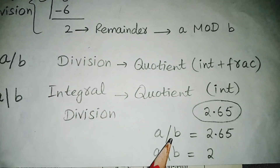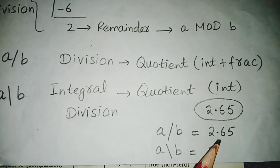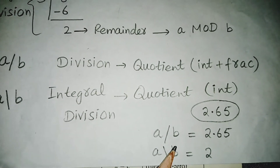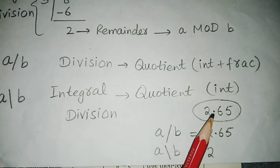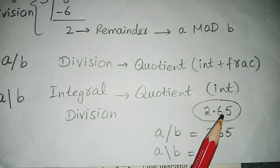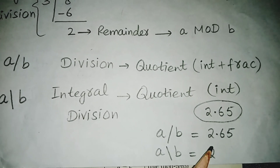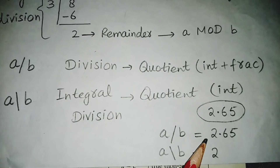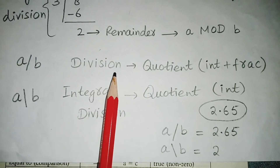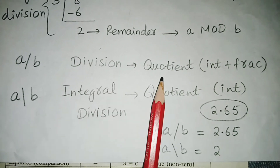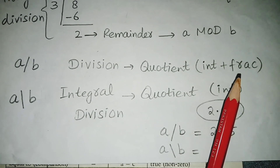So the regular division operation A / B gives the answer 2.65. But if we talk about A backslash B — that is, integral division — in integral division, there is no fractional part allowed in the quotient. So the answer is only the whole number 2. In division operation, we write the quotient, and in integral division, the fractional part is removed.